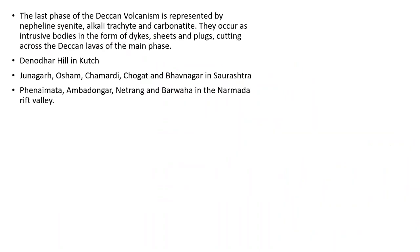The last phase of Deccan Volcanism is represented by rocks like Nephelinite, Alkali Trachyte, and Carbonatite. They occur as intrusive bodies in the form of dikes, sheets, and plugs cutting across the main-phase Deccan lava flows. These are exposed in the Dhrodhar Hills in Kutch, places in Saurashtra like Junagadh, Osham, Shamadi, Choghat, and Bhavnagar, and places like Pheniamata, Ambadongar, Netrang, and Barwaha in the Narmada Rift Valley.